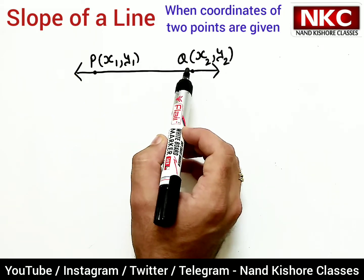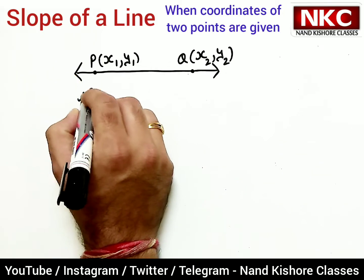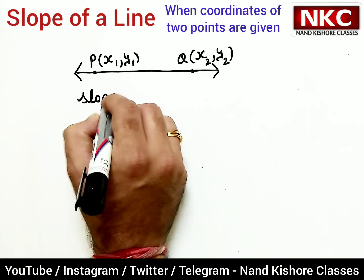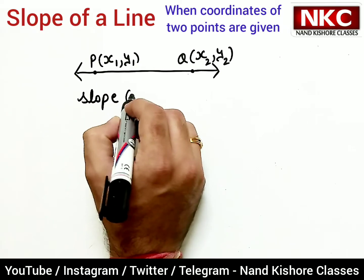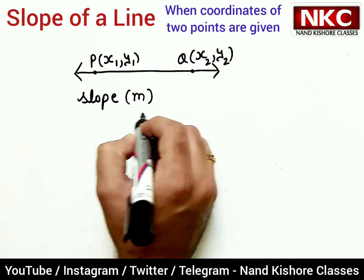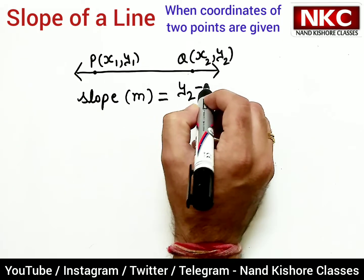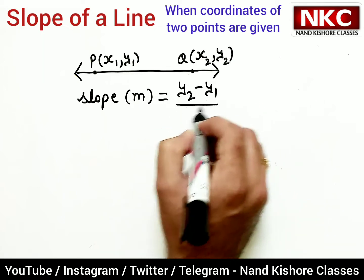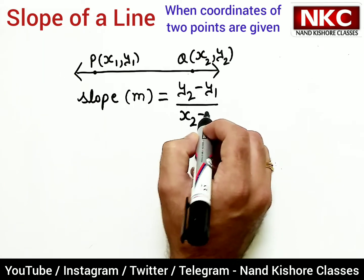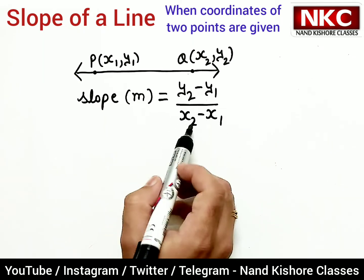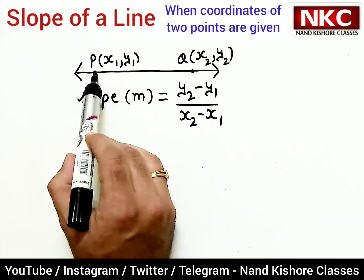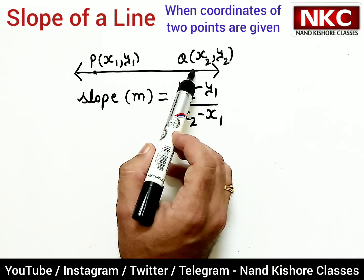First of all, let us learn the formula. Slope, which is also denoted by small m, is given by y2 minus y1 over x2 minus x1. This is the formula to be used when two points are given.